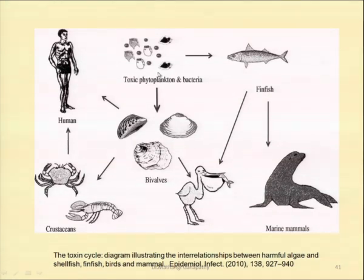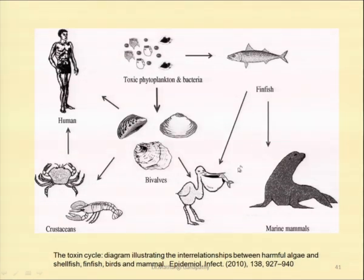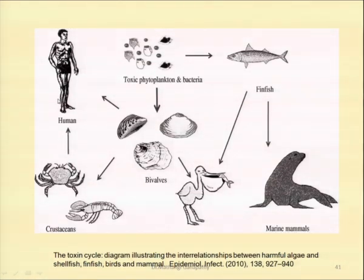These are consumed by the bivalves, the molluscs. They can be directly consumed by the fish. This fish in turn can be consumed by marine mammals and by birds. These bivalves can also be consumed by crustaceans. Crustaceans can be taken up by humans, or the bivalves can be directly taken by humans. It is an interrelationship diagram where the highest position in the food chain is occupied by humans, who are going to get a concentrated dose of the toxin from the source.